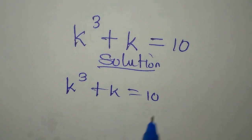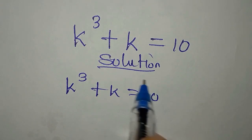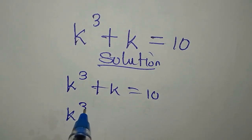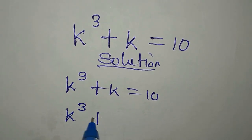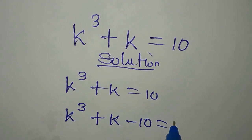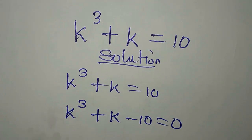So we take everything to the left: we have k to the power of 3 plus k minus 10 equals zero.